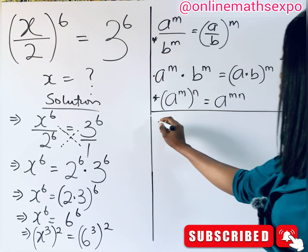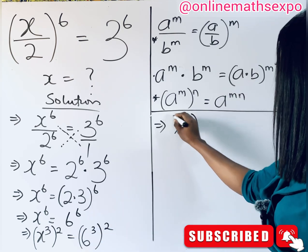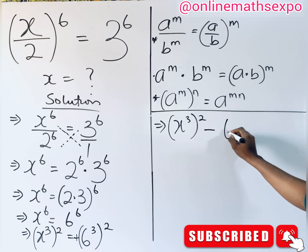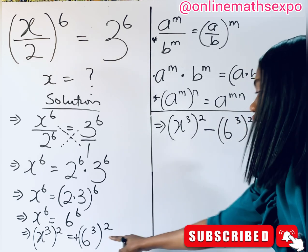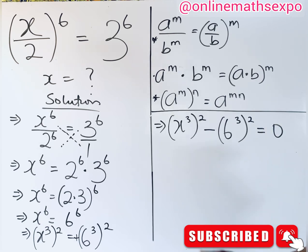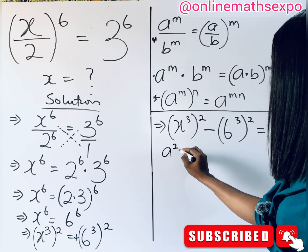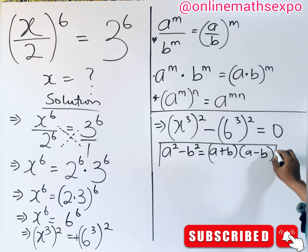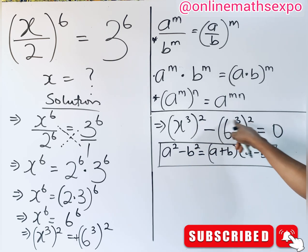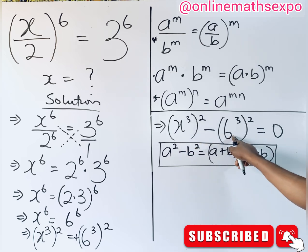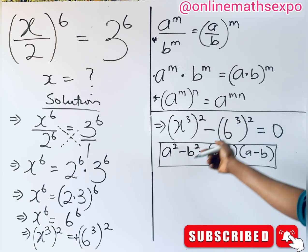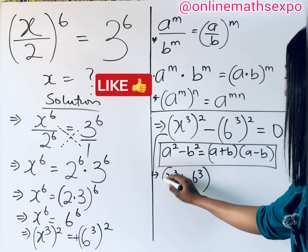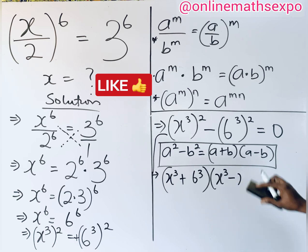From here, bring everything to one side: (x³)² minus (6³)² equals 0. This reminds us of the difference of two squares: a² minus b² equals (a + b)(a − b). Here, a is x³ and b is 6³. Applying this, we get (x³ + 6³)(x³ − 6³) equals 0.